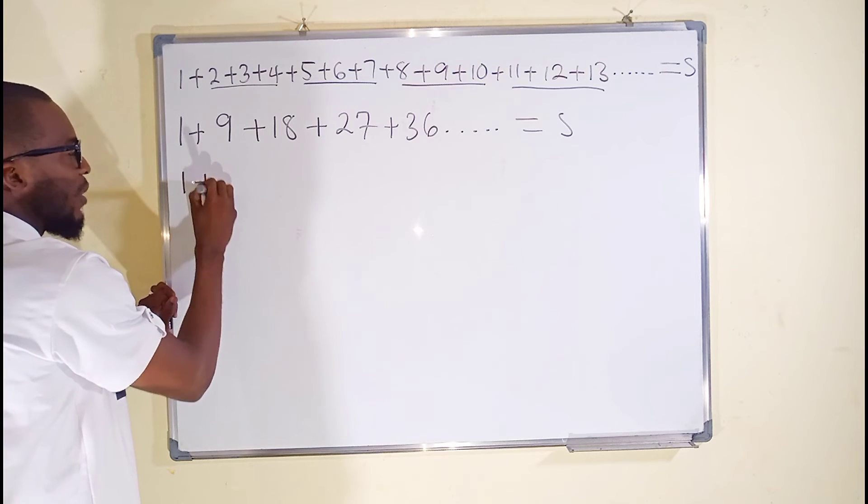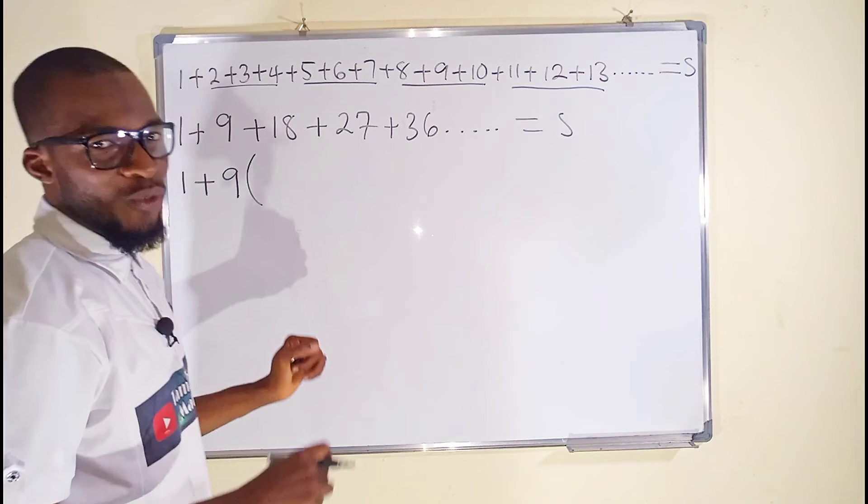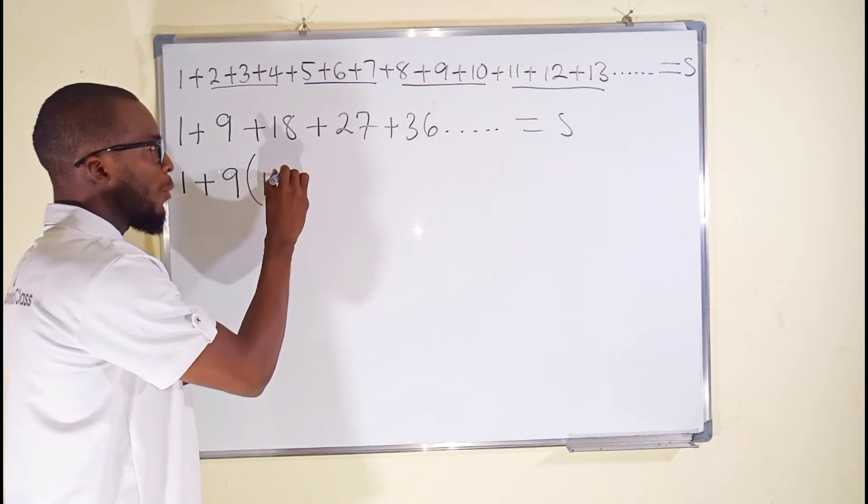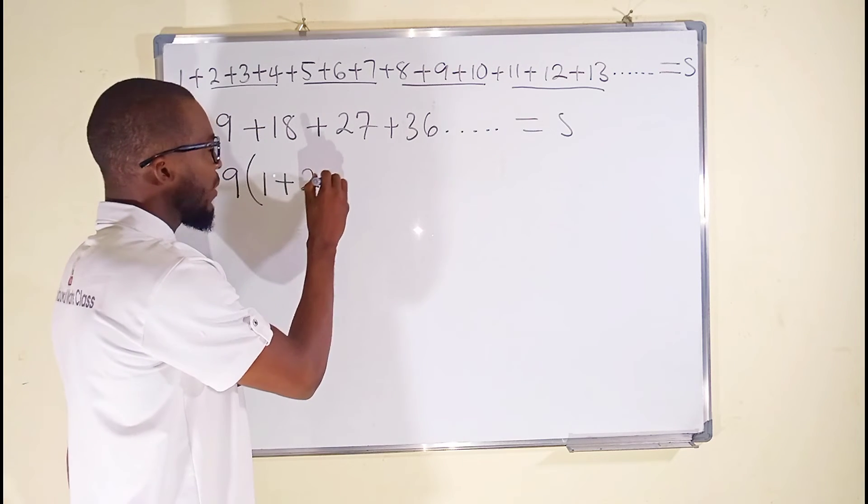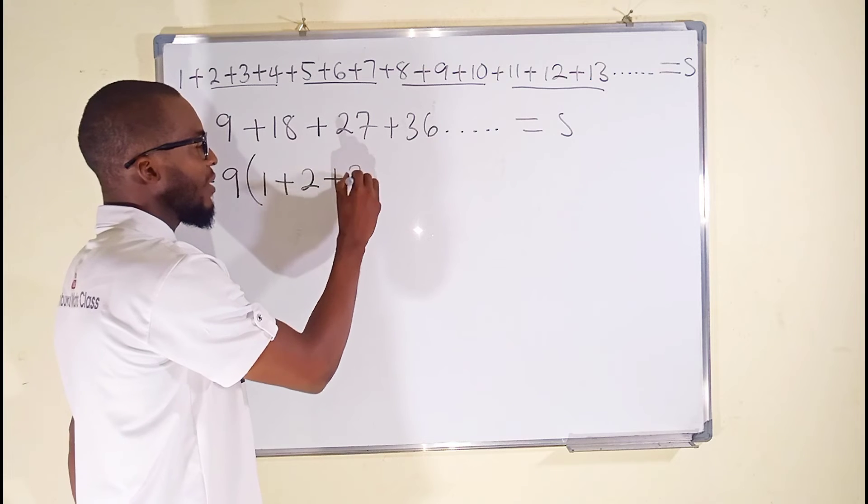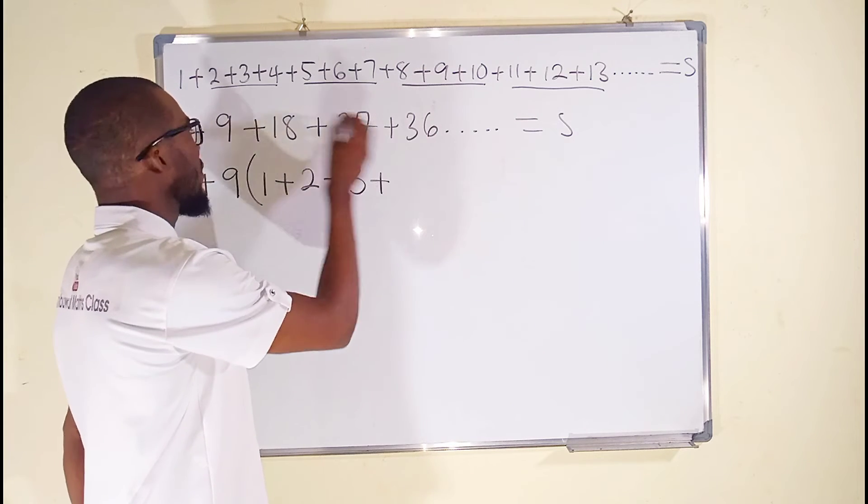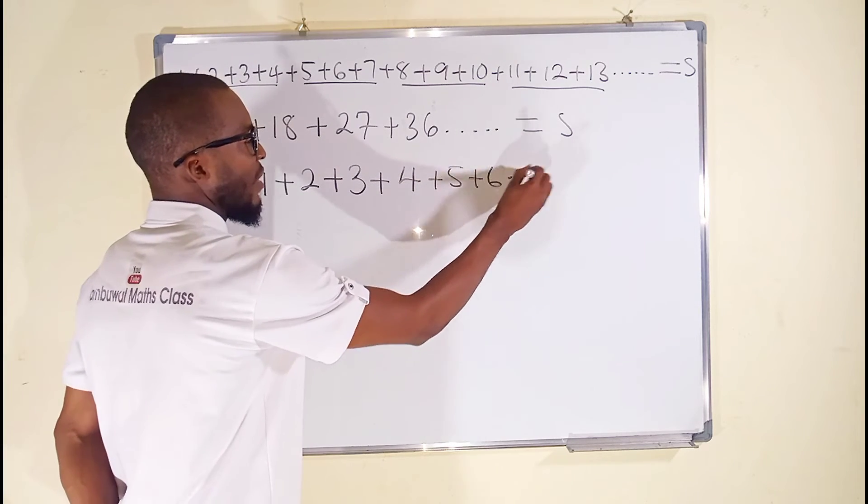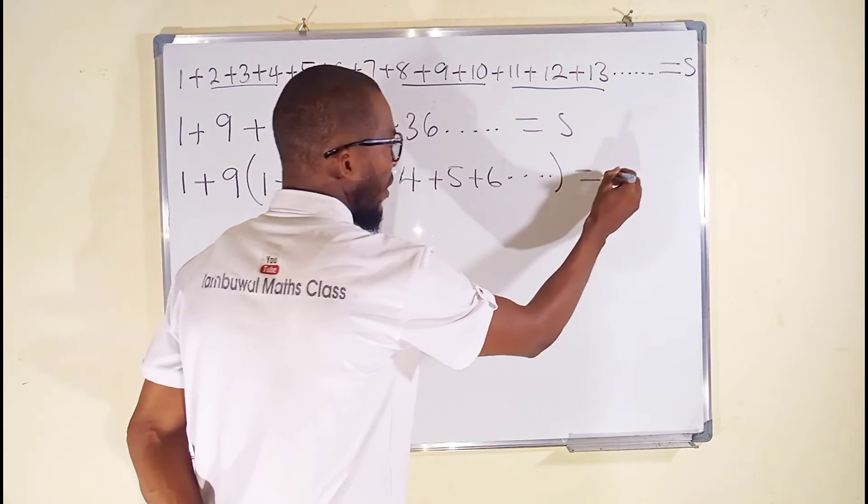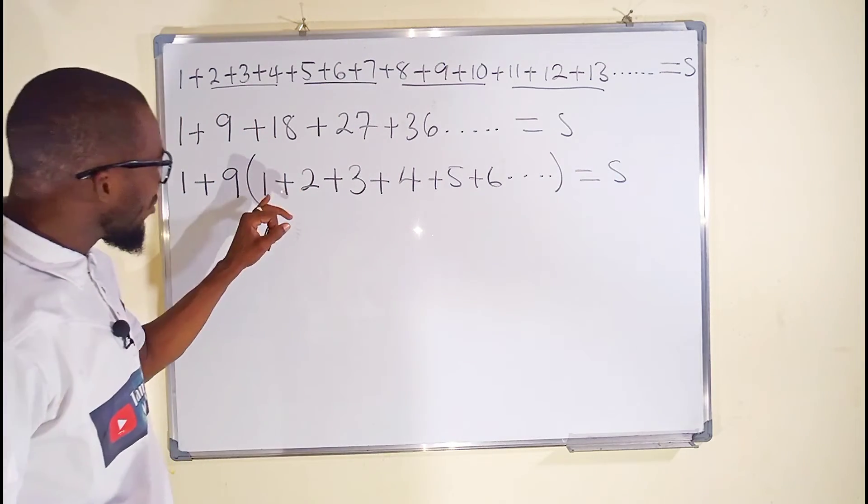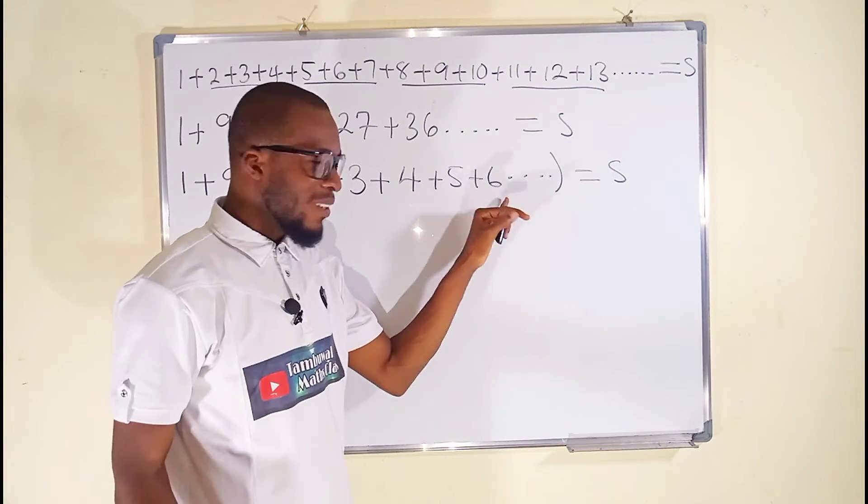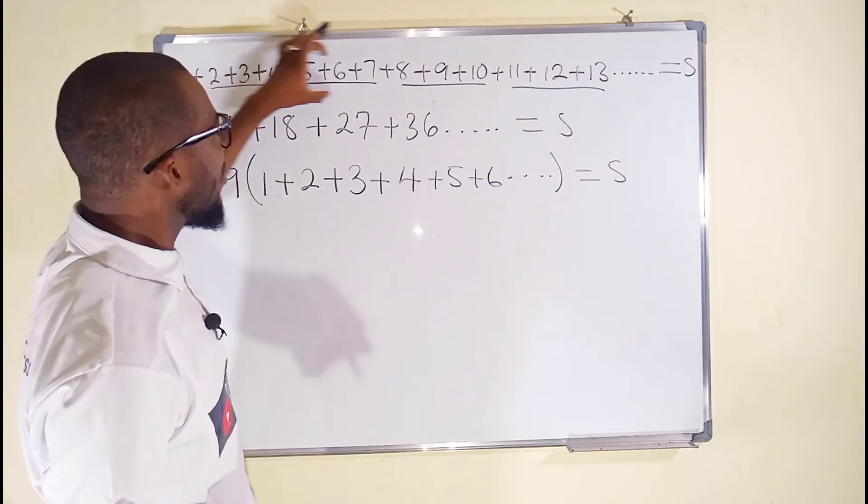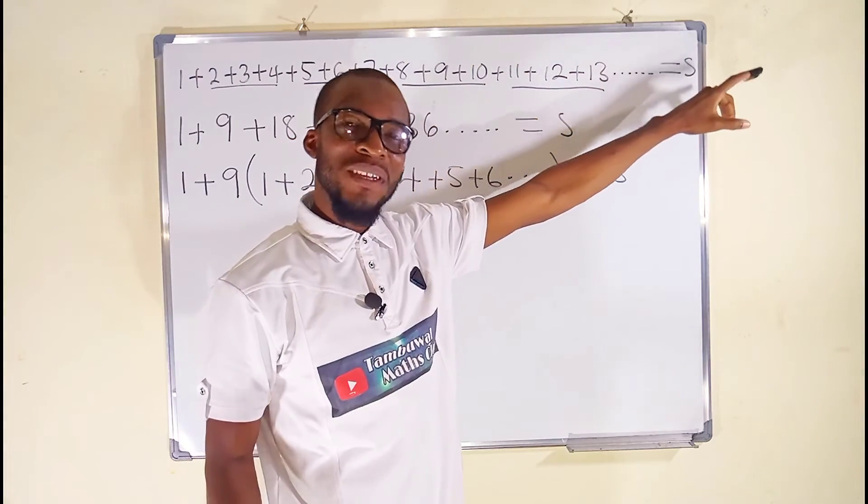So we have still we have 1 here plus 9. So I'm going to factor 9 out. So from here, 9 divided by 9 is 1 plus 18 divided by 9 is 2, 27 divided by 9 is 3, 36 divided by 9 is 4. This is how we are going to get these numbers 5, 6. The whole of this equals S. But look at these numbers: 1, 2, 3, 4, 5, 6, 7, 8, 9. You see, we have dot, dot. It is exactly repeating these numbers, which we have set to be equal to S.